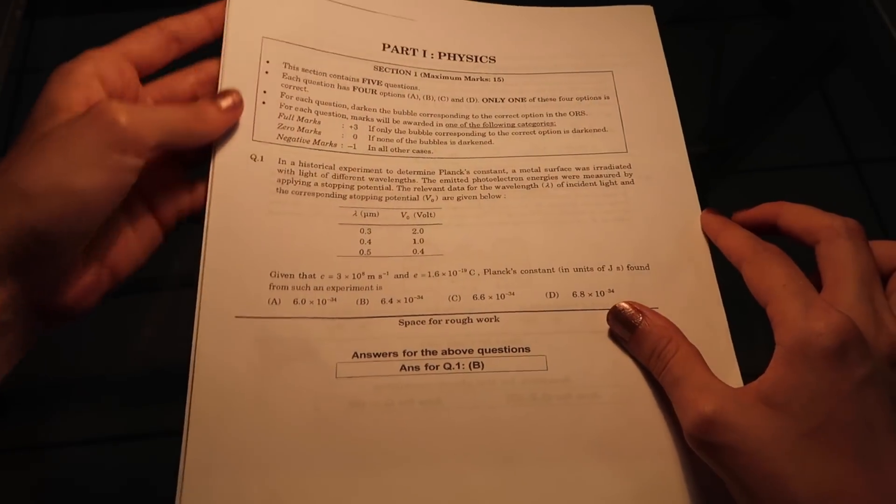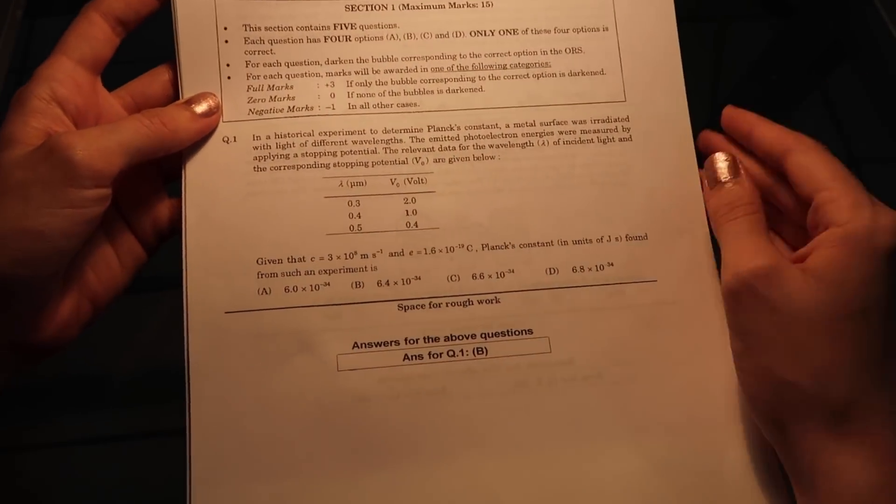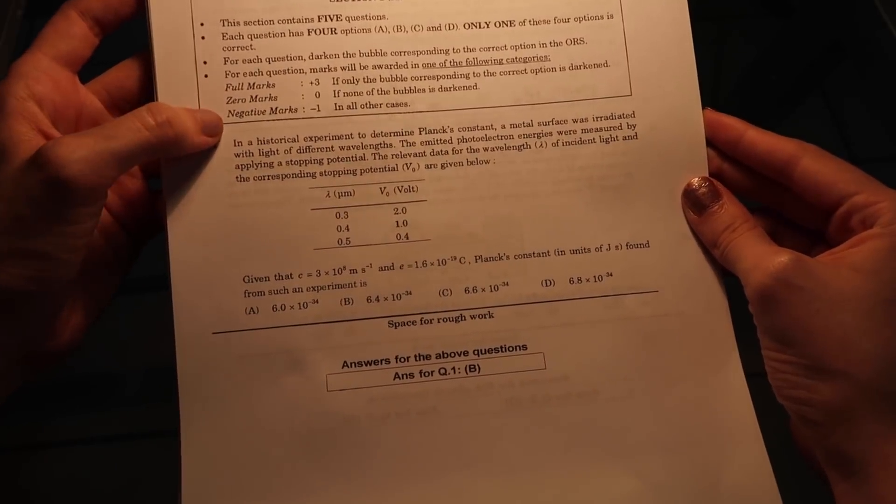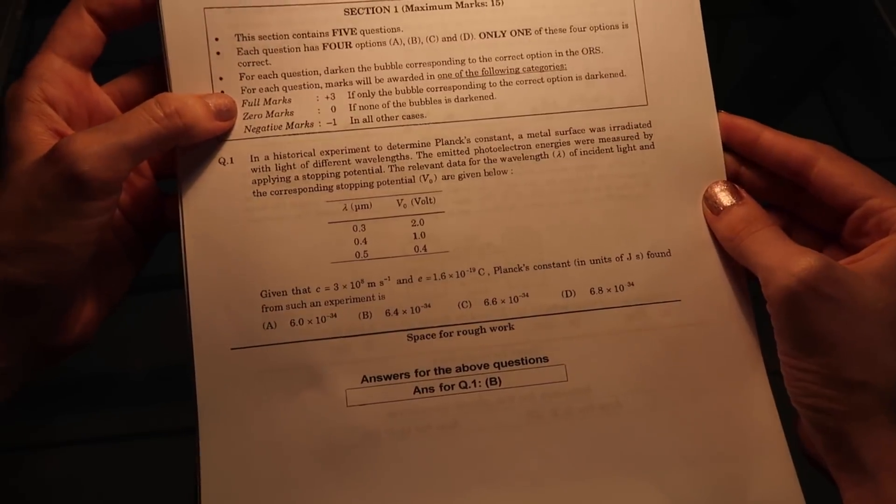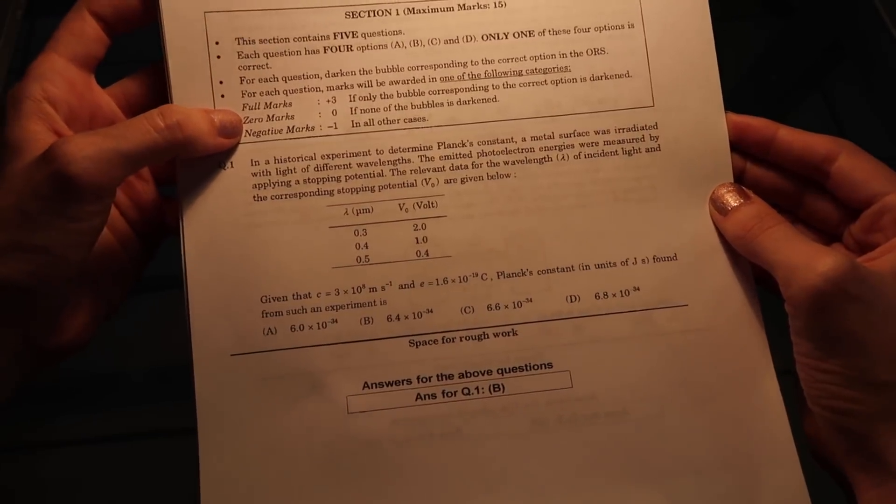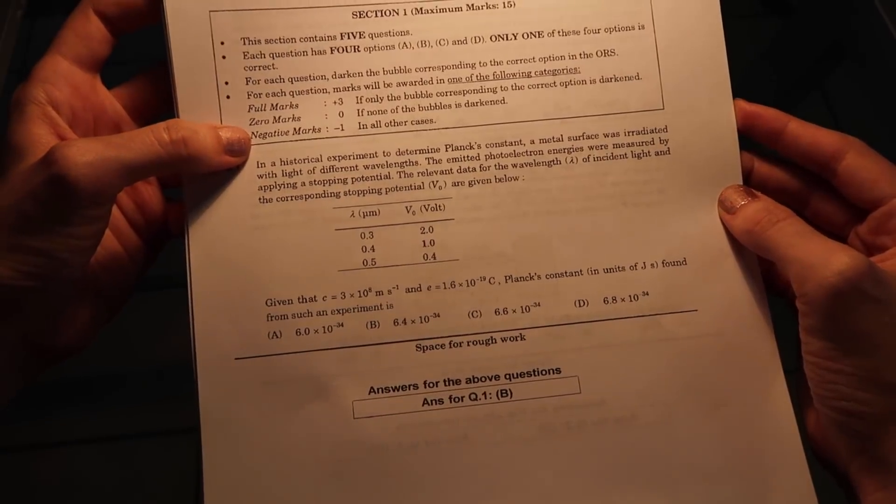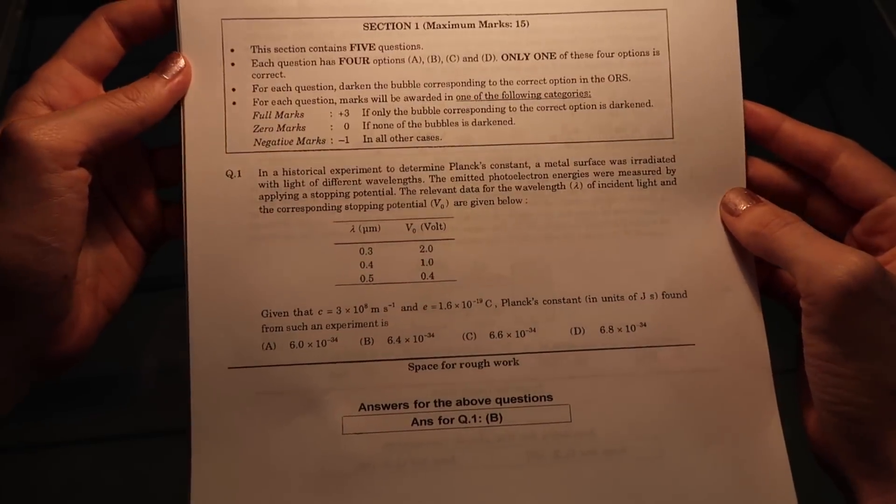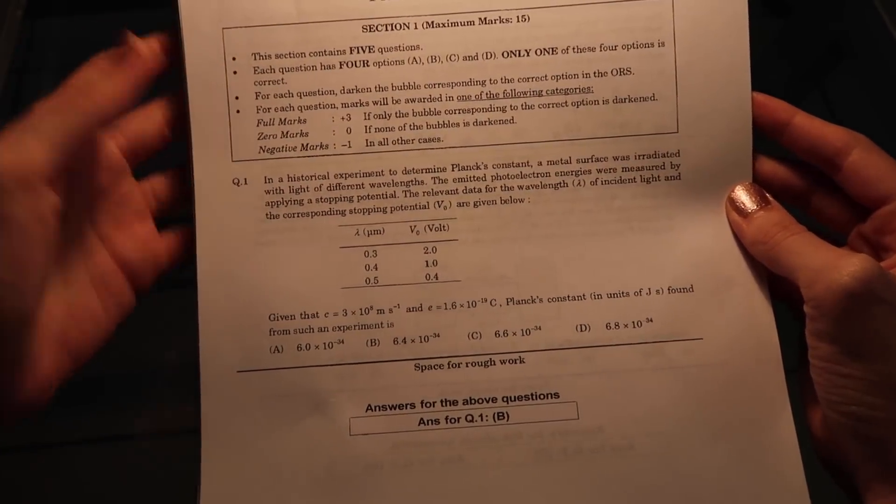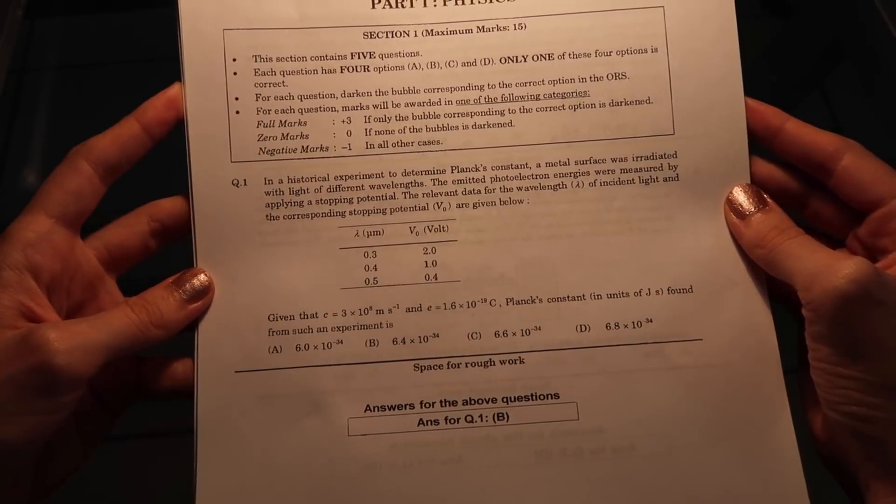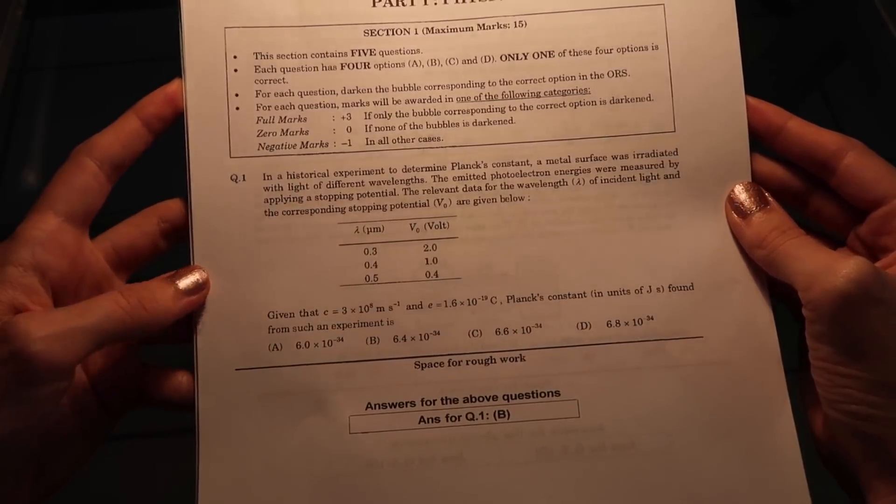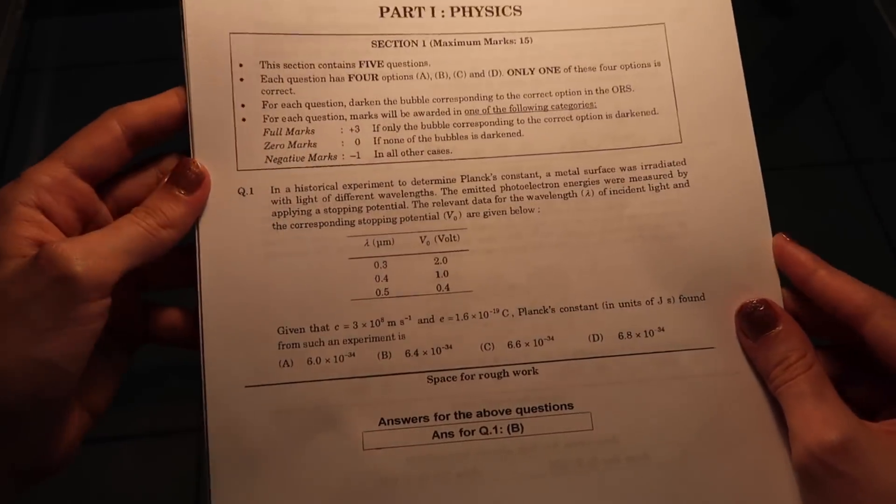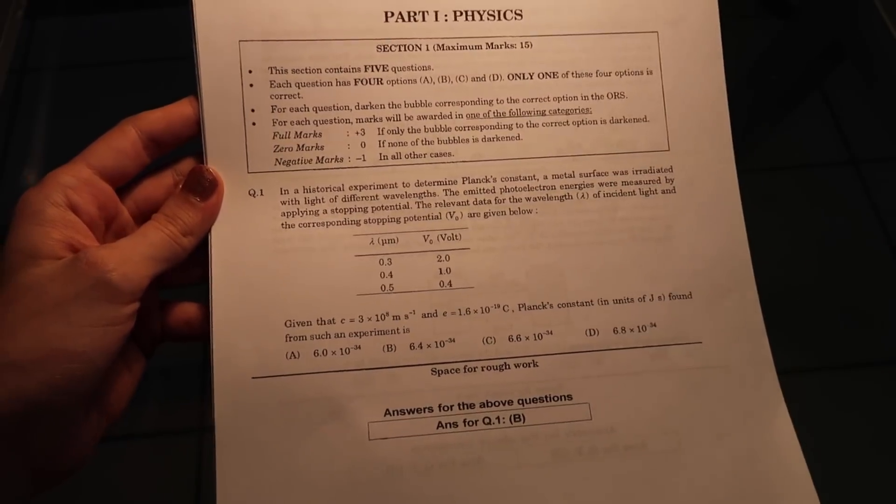Alright, here we are. So the first thing that strikes me is that everything is multiple choice, so the exam's got that going for it. And then there's the marking scheme. So it looks like we get three marks for a correct answer, zero if we don't attempt, and minus one mark if we get it wrong. Now that is really harsh, and exams like that where you get negative marks are really discouraging from just trying to have a guess. But it's also very discouraging and very nerve-wracking because you're always doubting yourself because there's so much at stake. You don't want to get the answer wrong.